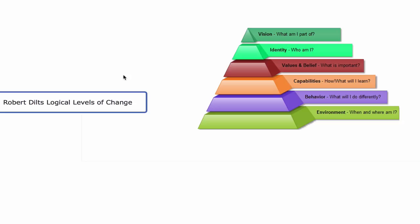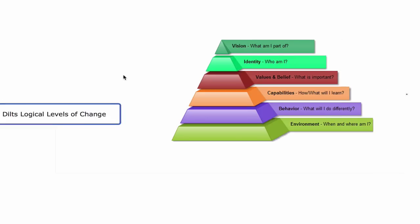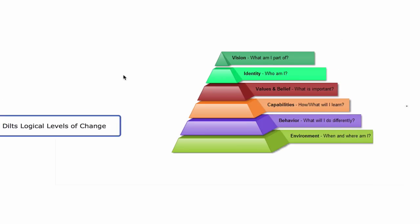Robert Dilts' logical levels of change is a model that has been around for a long time, but I believe nowadays more than ever before it is very important to help you create the kind of success that you want — whether it's business success, health and fitness, or whatever area of choice. You can create success to a higher degree and faster using this very simple model. This has been a foundation for my hundred-plus coaching and consulting clients over the last few years, for my training programs, and for my own personal growth, development, and even leadership.